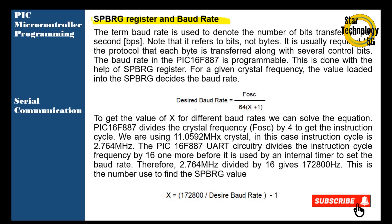SPBRG register and baud rate. The term baud rate is used to denote the number of bits transferred per second — note that it refers to bits, not bytes. It is usually required by the protocol that each byte is transferred along with several control bits. The baud rate in PIC16F887 is programmable using the SPBRG register. For a given crystal frequency, the value loaded into SPBRG decides the baud rate. The desired baud rate equals the oscillator frequency divided by (64 × (X + 1)), and we can solve the equation to get the value of X for different baud rates.